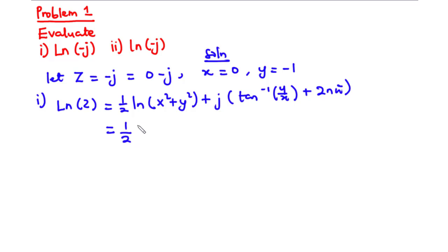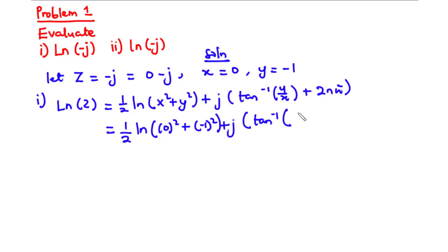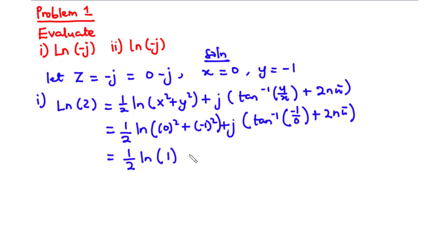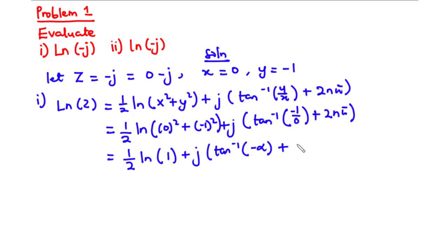Substituting x equals 0 and y equals negative 1: we have one half times ln(0 squared plus negative 1 squared) plus j times (tan inverse of negative 1 over 0 plus 2n pi). Simplifying: 0 squared is 0 and negative 1 squared is 1, so we have one half times ln(1) plus j times tan inverse of negative infinity plus 2n pi.